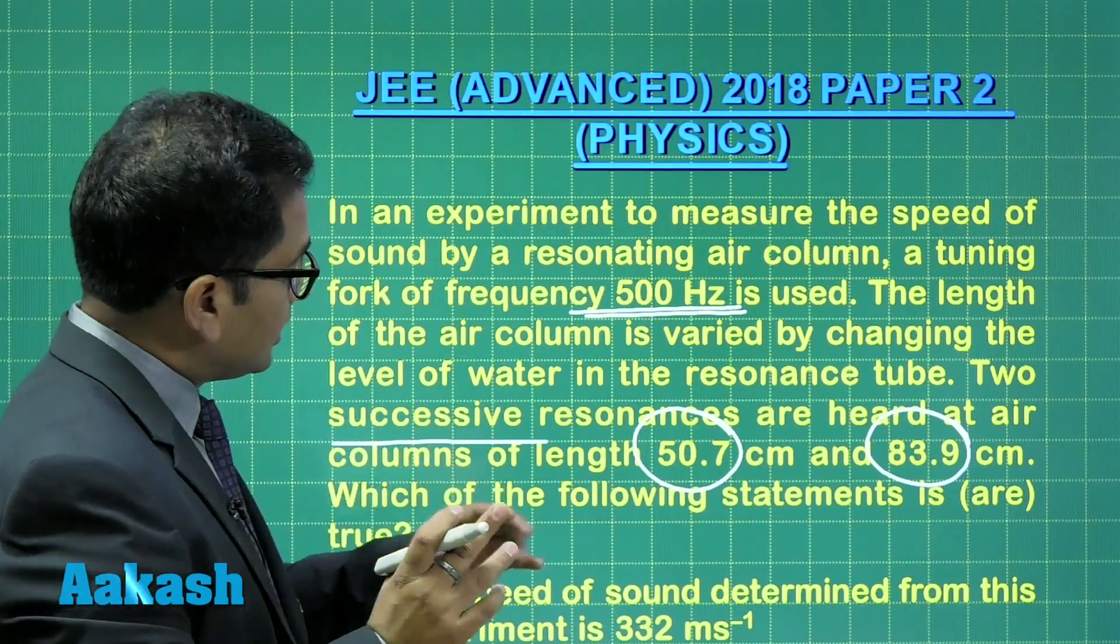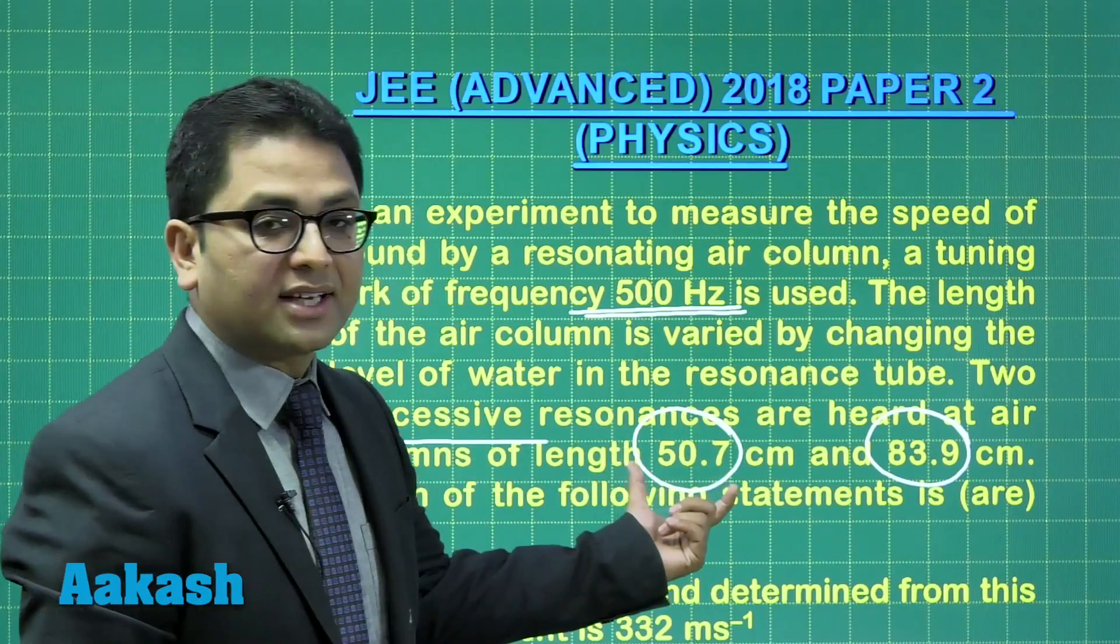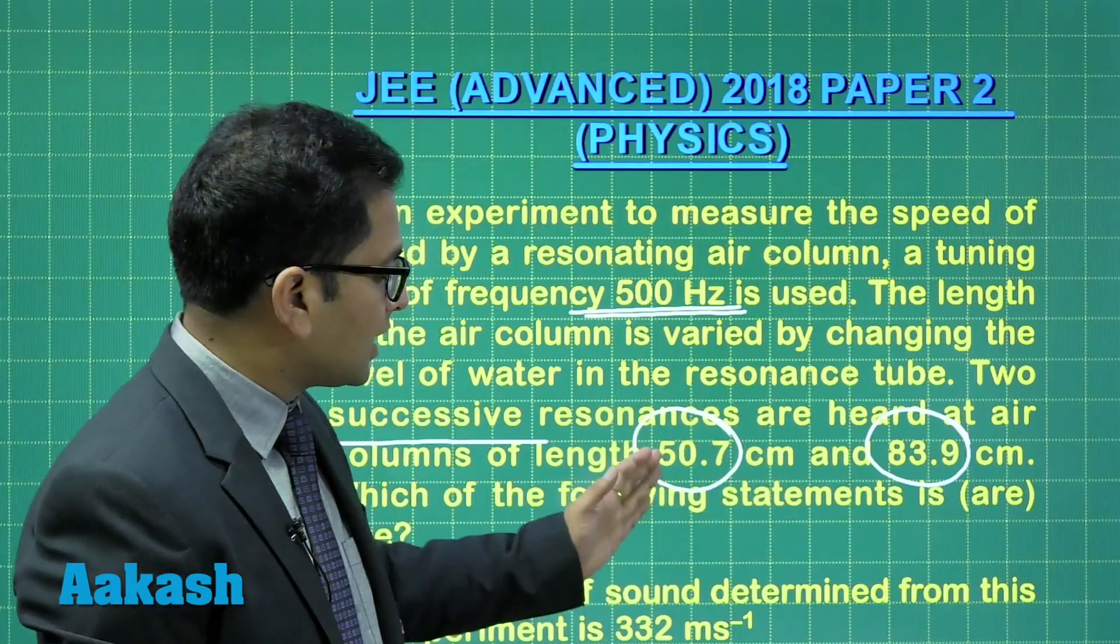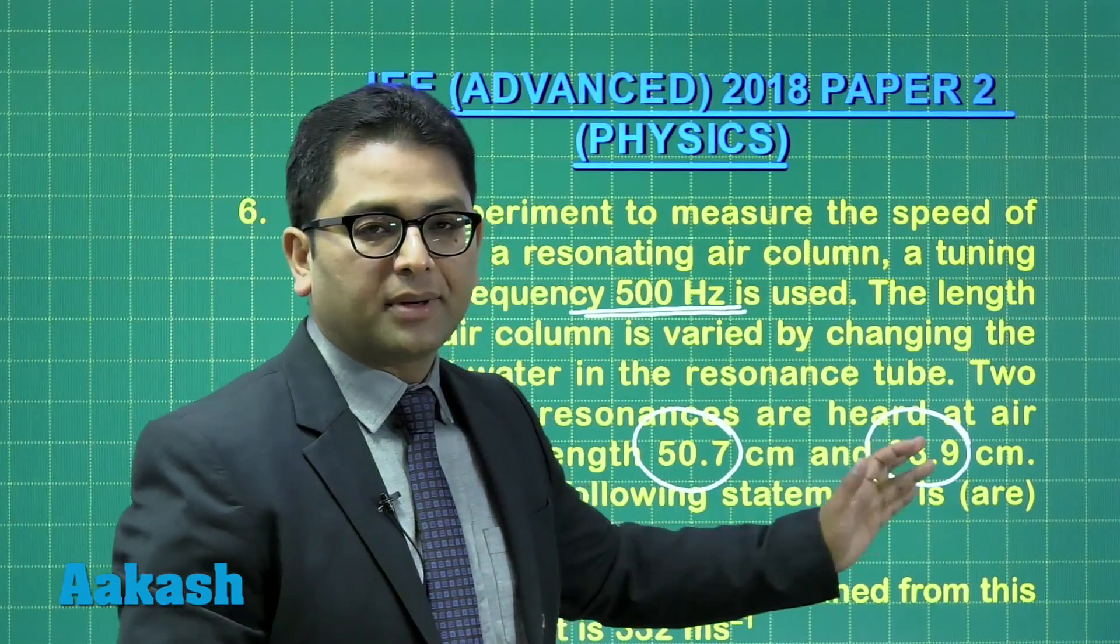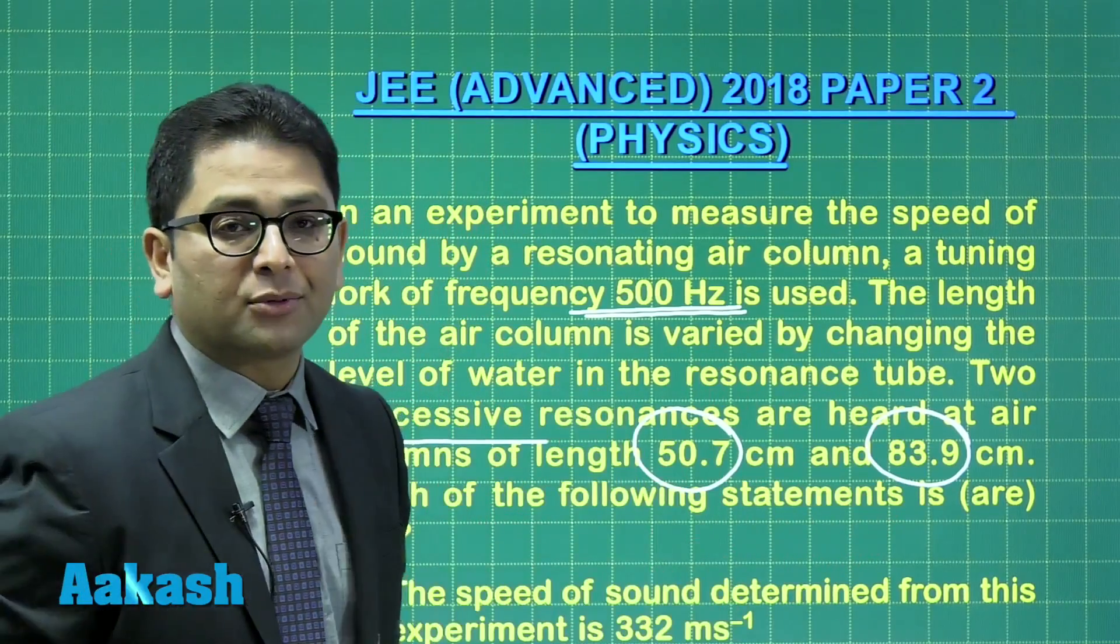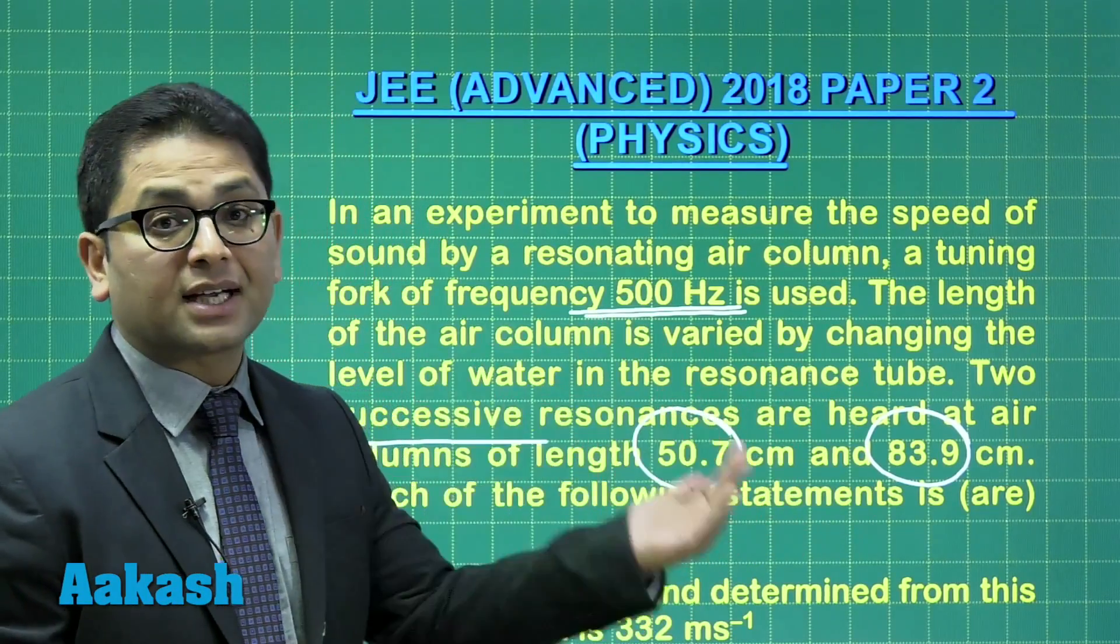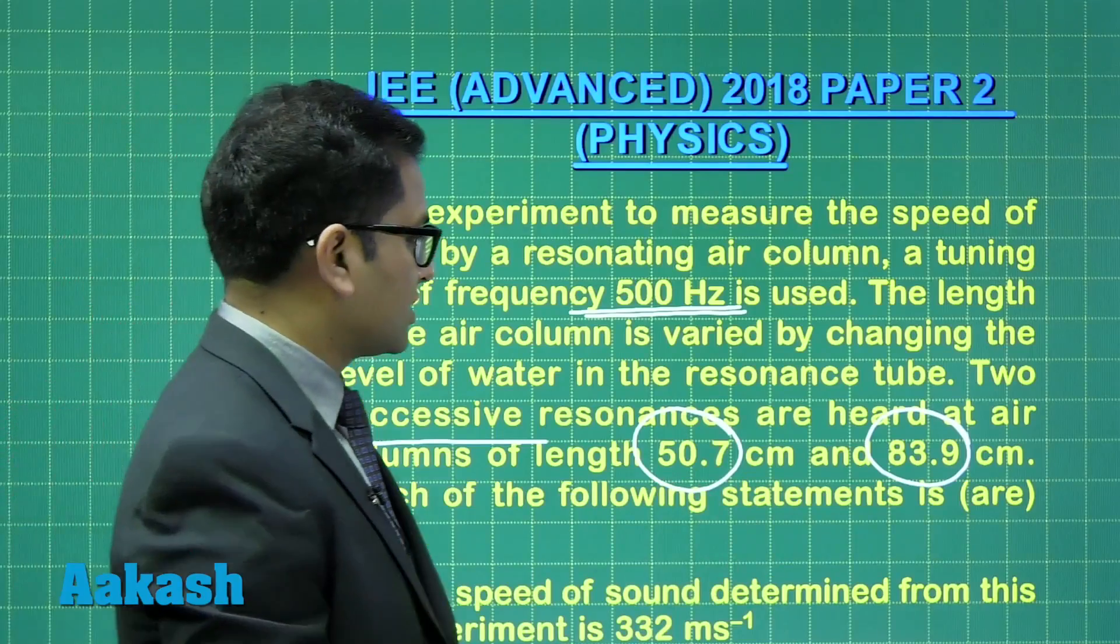But notice, the question does not say this is the first resonance heard. They are successive. Like, it could be seventh harmonic, then this would be ninth, because only the odd harmonics would be present. But it is not first and third. That hasn't been specified. That may come out of calculation.